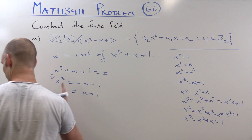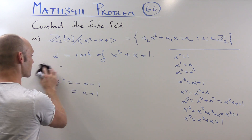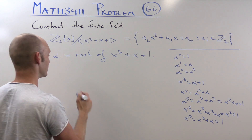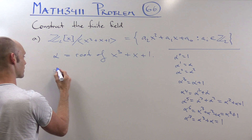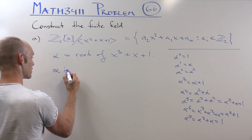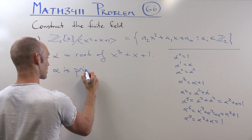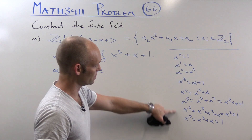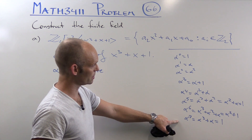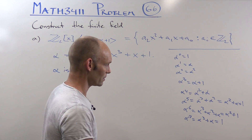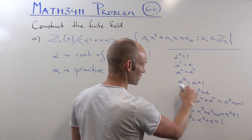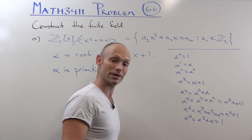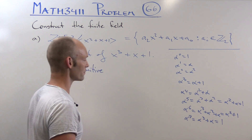So let's write that up. Alpha is primitive, and we've listed up the powers of alpha as linear combinations of 1, alpha, and alpha squared. This tells us all about the multiplicative structure of the field.